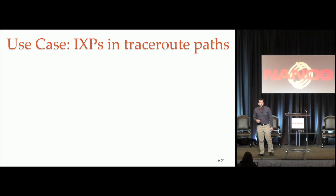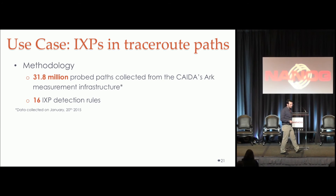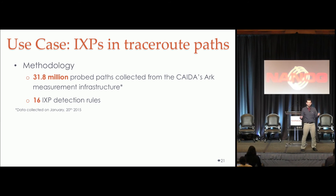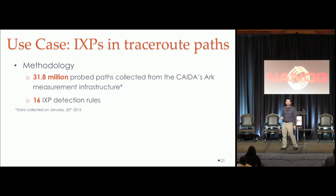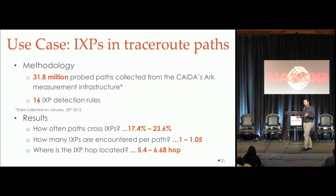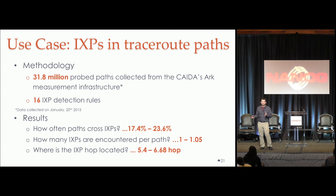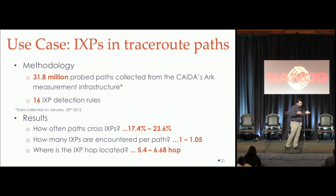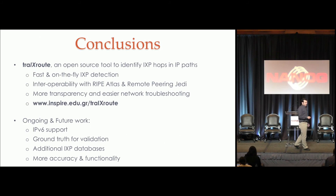As a next step, we explored what else we can learn from IXPs in Traceroute paths. We used 30 million probes provided by CAIDA and applied 16 different IXP detection rules. Our results showed that in about 20% of these paths we have IXP crossings. We don't usually see more than one IXP crossing link, and these IXP crossing links happen, on average, at the middle of the paths.